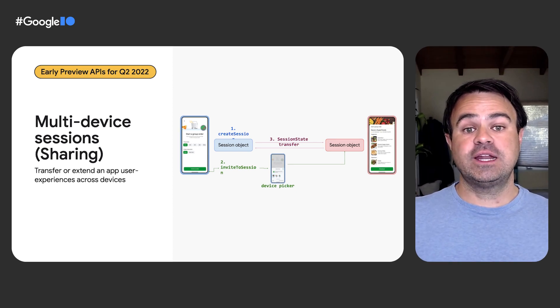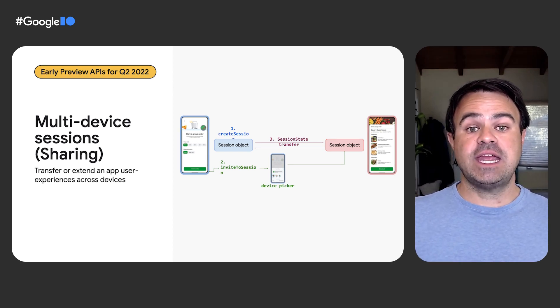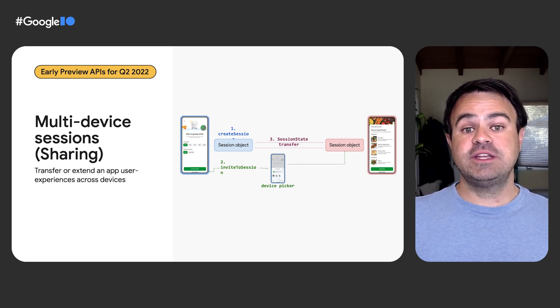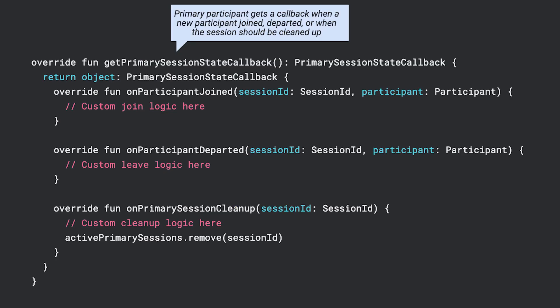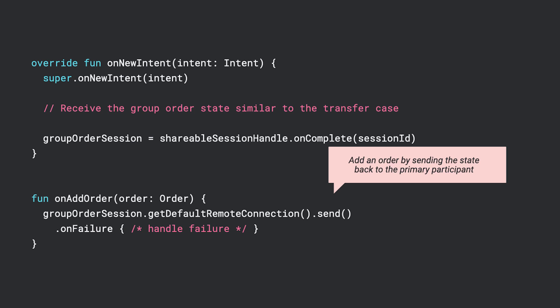Sessions are not just for transferring an experience between devices, but also for sharing state across the sender and all receiving devices. Within shared sessions, we refer to the sending device as the primary participant and all receiving devices as secondary participants. Creating a shared session is the same, other than providing an implementation of primary session state callback and calling our session's invite-to-session method rather than transfer session. In this example, we're supporting a group food order. Primary session state callback implementation has callbacks for the individual state change operations where you can implement custom logic. Secondary participants can use the established session to both receive and send state to and from the primary participant.